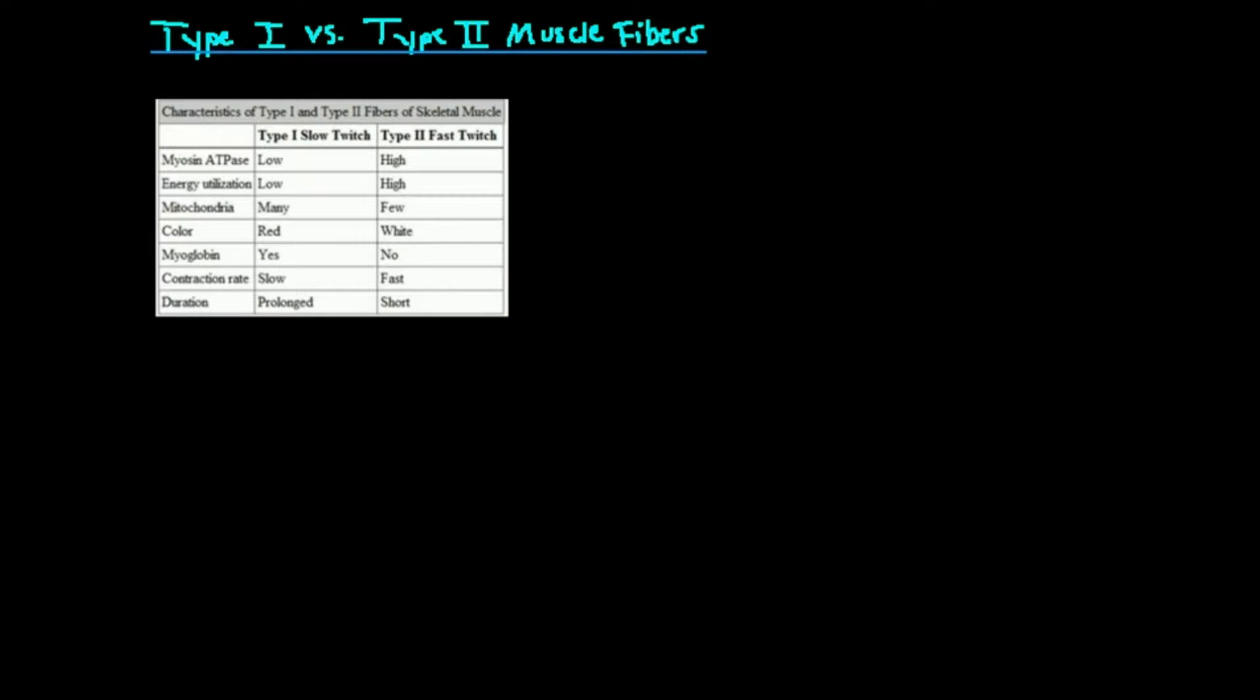Every person has skeletal muscle. You can think of your bicep, your quadricep, abdominal muscles, any skeletal muscle. In that skeletal muscle, there's multiple kinds of muscle fibers. There are type 1 muscle fibers mainly and type 2.